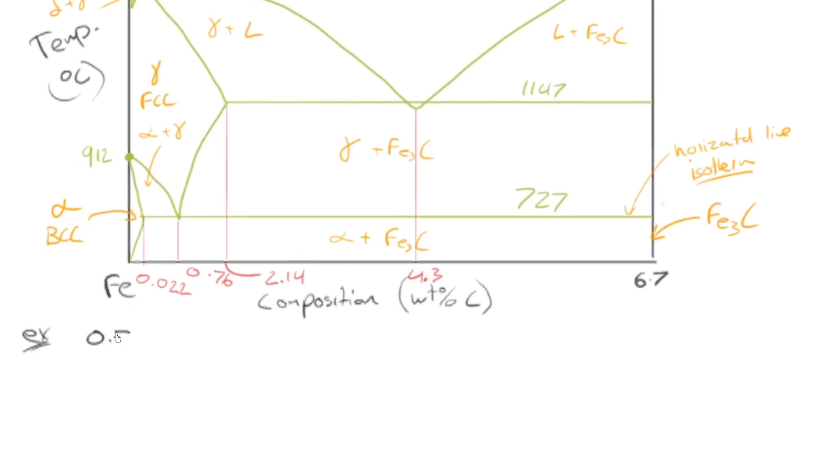a 0.76 weight percent carbon steel. It's a special kind of steel, actually. It's right at this composition. It's called a eutectoid steel. You don't need to memorize that. But in case you ever come across it, it says it's a eutectoid steel. So it refers to this specific composition. And say we did this at 726 degrees C.